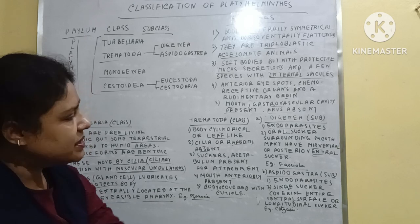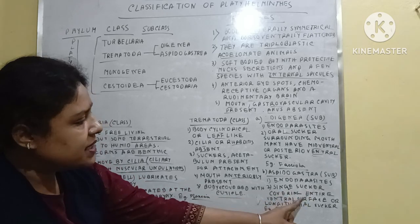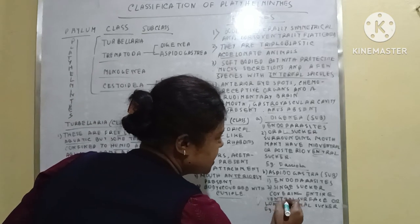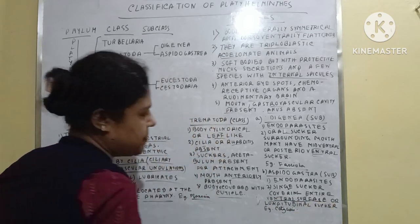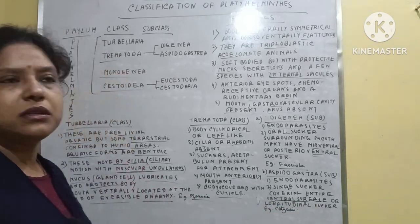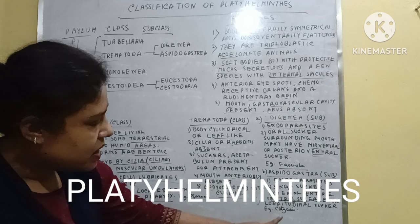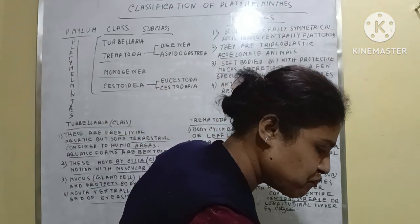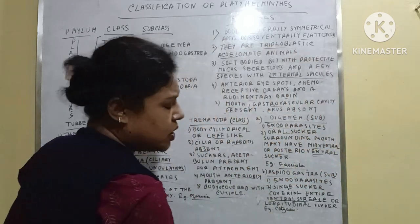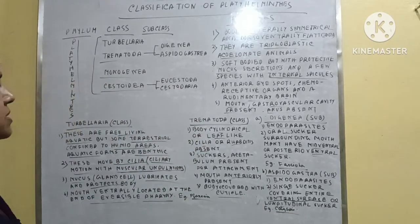For the subclass Aspidogastra: these are also endoparasites, but here a single sucker covers the entire ventral surface. Sometimes longitudinal suckers are also present. Its example is Cotyaspis (C-O-T-Y-A-S-I-S).